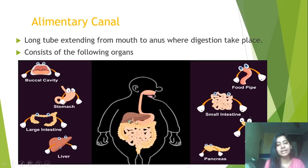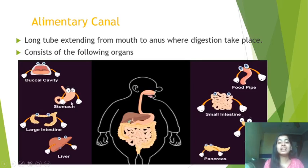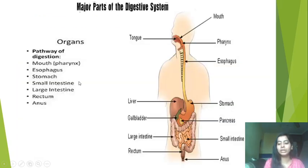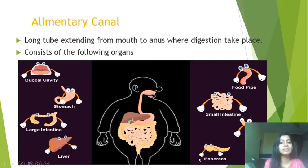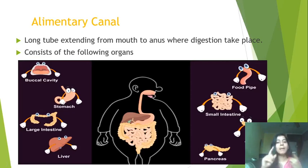The alimentary canal also includes the large intestine, food pipe, small intestine, and anus. Out of all these, the main organs of the alimentary canal are the buccal cavity, stomach, large intestine, anus, small intestine, and food pipe. The liver and pancreas are not main organs of the digestive system — they are accessory organs. So there are two types: main organs and accessory organs, and liver and pancreas fall under accessory organs.